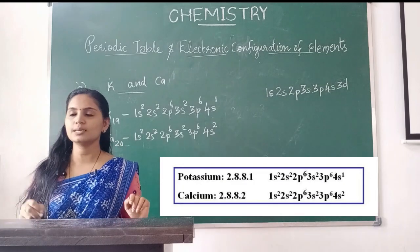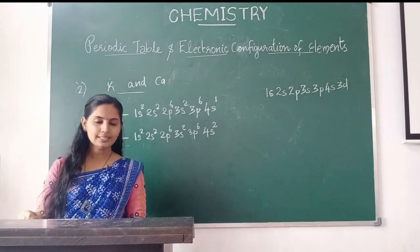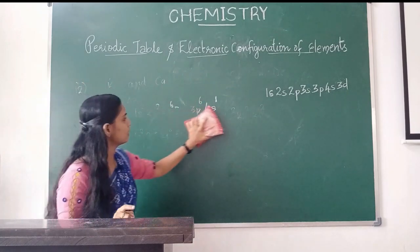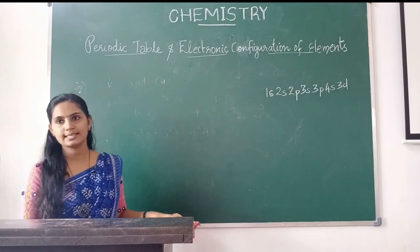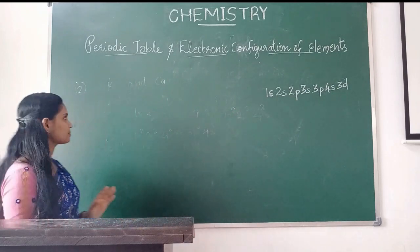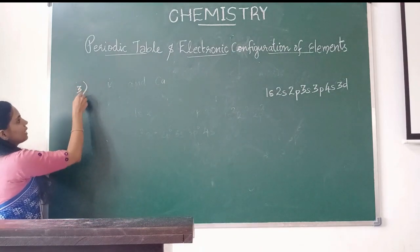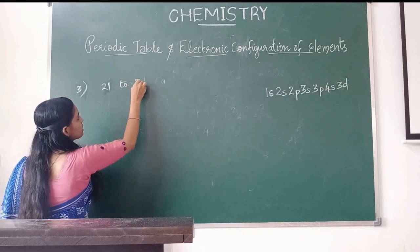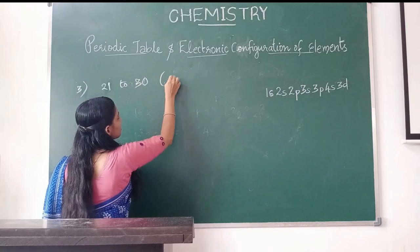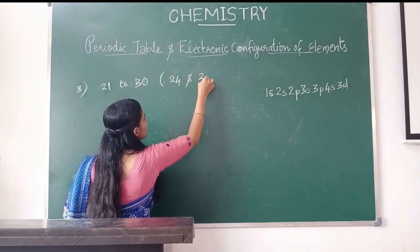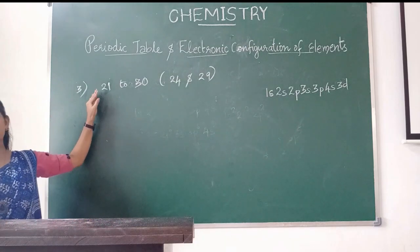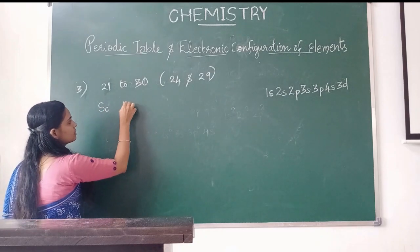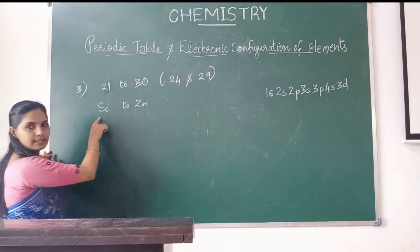Our third category is elements of atomic number 21 to 30, except chromium and copper — that is, scandium to zinc excluding atomic numbers 24 and 29.